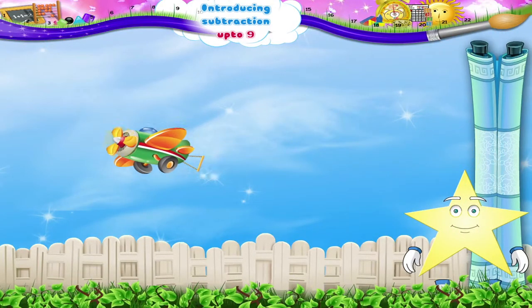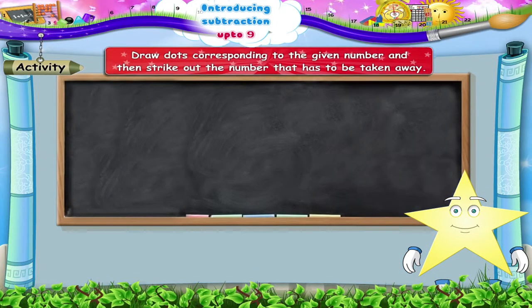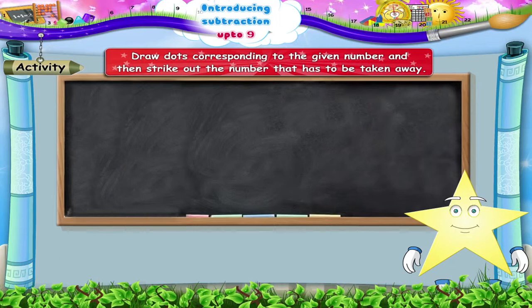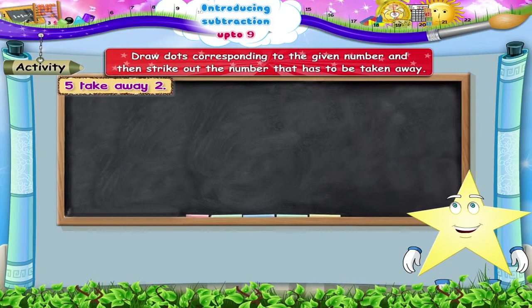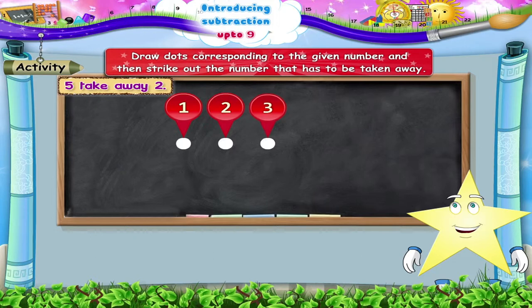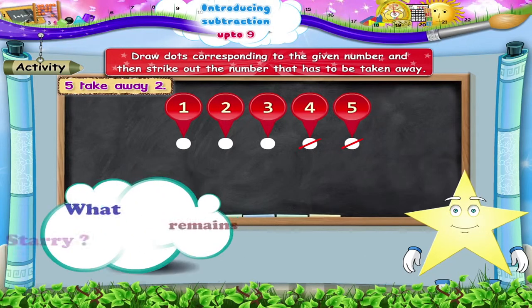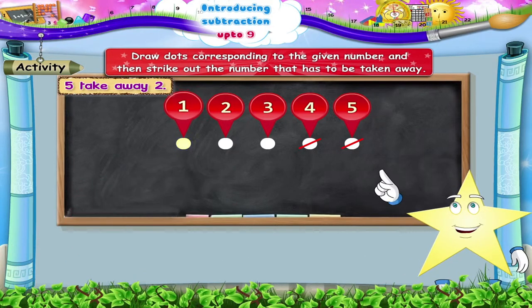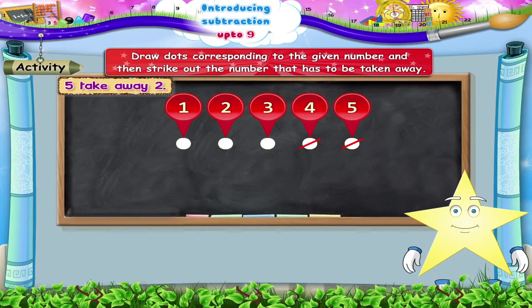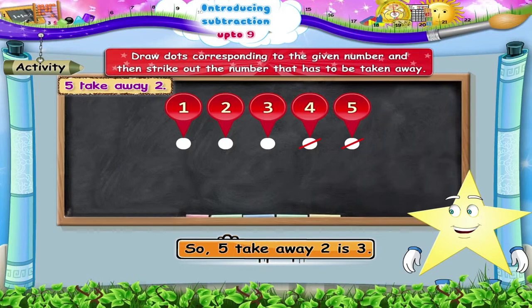Here is another activity. We have to draw dots corresponding to the given number and then strike out the number that has to be taken away — in this way we will find our answer. Now, five take away two: we make one, two, three, four, five dots. Next, we strike out one, two dots. What remains? One, two, three dots. So five take away two is three.